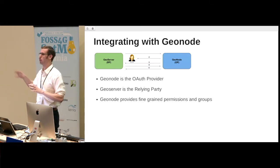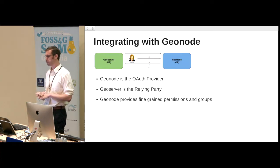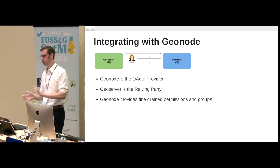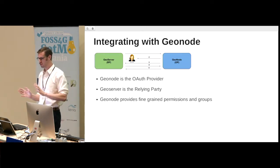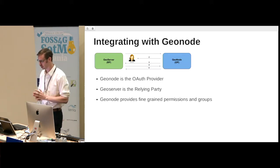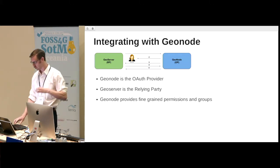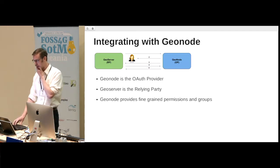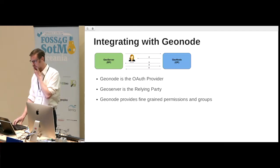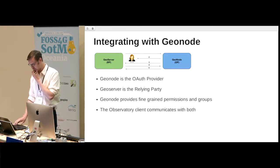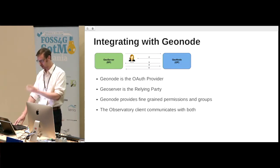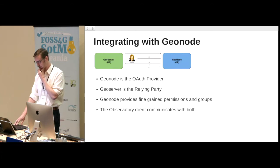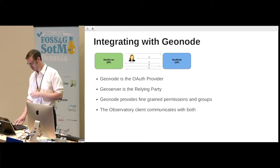GeoNode handles all of that with GeoServer, which is really important. There are ways you can do these sorts of solutions with GeoServer directly, but it's very helpful if someone has already set that up. The observatory client communicates with both GeoNode and GeoServer.